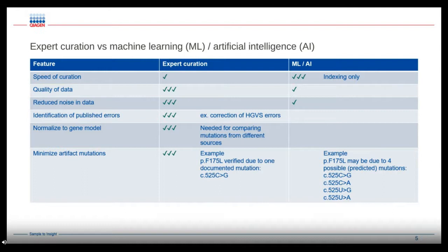Speed of curation is definitely where machine learning or AI methods win over expert curation, because expert curation is slower than an automated process. But the quality of data that our experts curate is far in excess of something automated, because you actually have PhD- or MD-qualified people reading the original publications and following a very strict curation protocol. The quality and consistency of what they extract is highly superior.